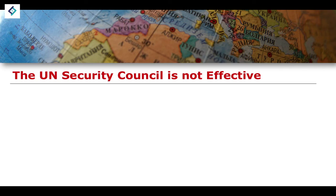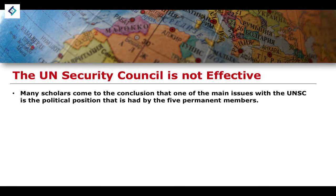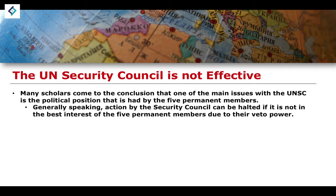Those are case studies you can utilize to argue the UN Security Council was successful. For the counter-argument, many scholars conclude that one of the main issues with the UN Security Council is the political position of the five permanent members. This creates an imbalance and a conflict of interest in situations where permanent members have vested interests not aligned with the Security Council's broader goals. Action by the Security Council can be halted if it is not in the best interest of the five permanent members, due to their veto power.